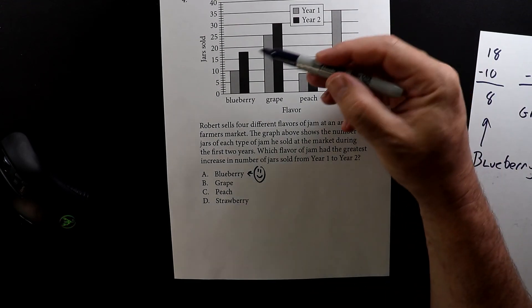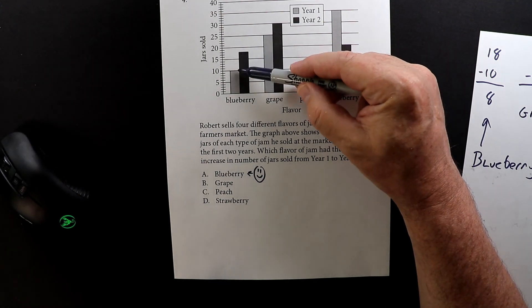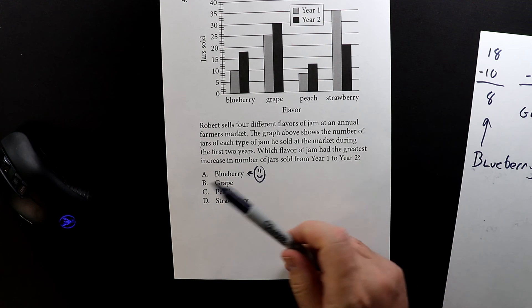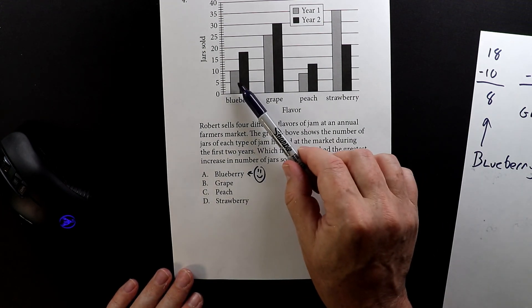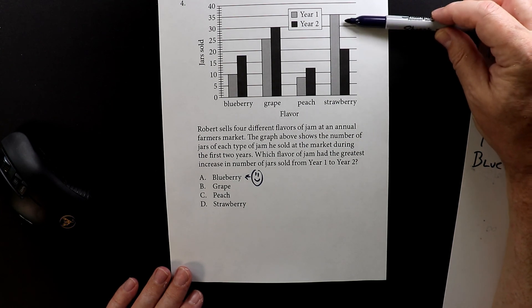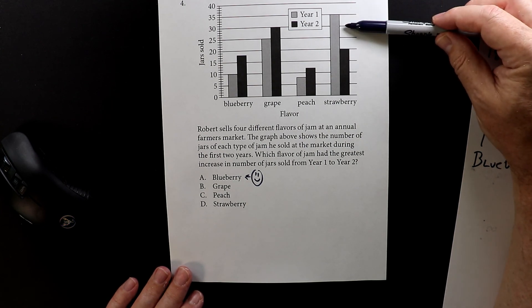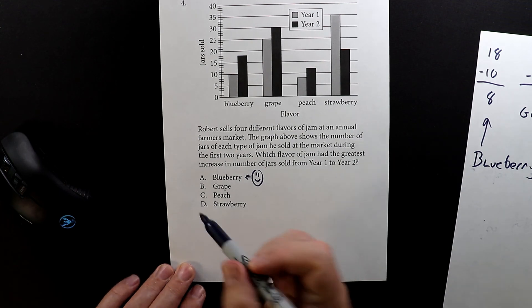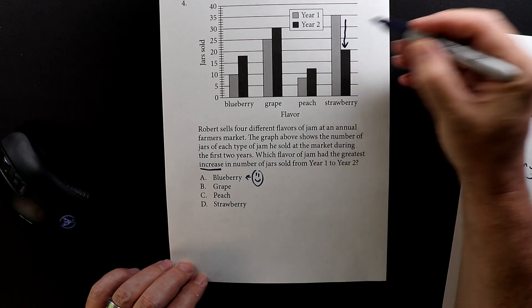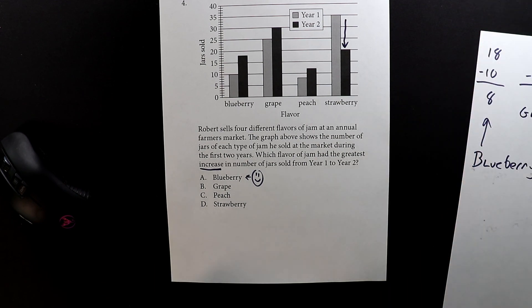So bar charts, you just have to, sometimes it's very obvious the increase or in this case decrease. This is where they would trick you up because here we're showing that it went up. The trick is that sometimes people would say oh the gap is biggest there so therefore that's the right answer. But here it's not an increase, this is a decrease, it goes down. So that's not what they're looking for.